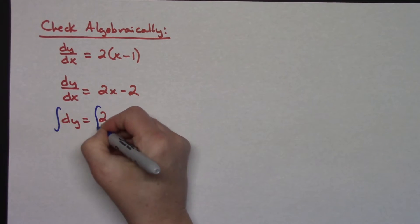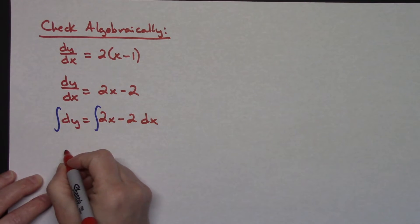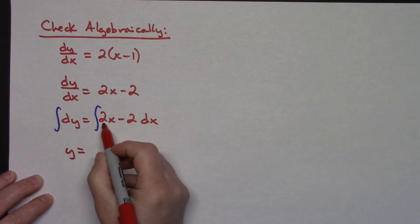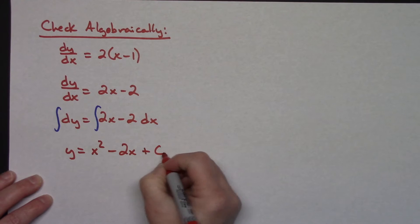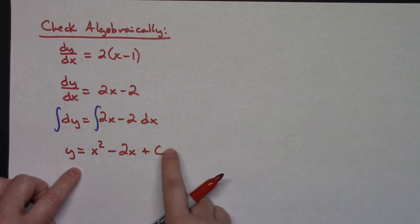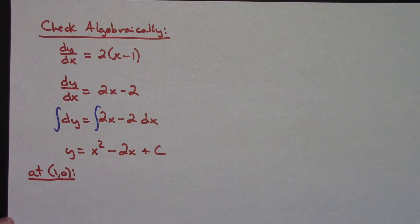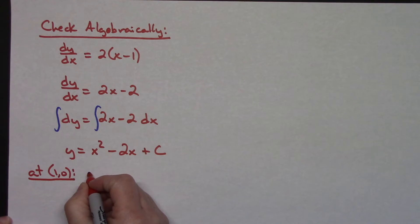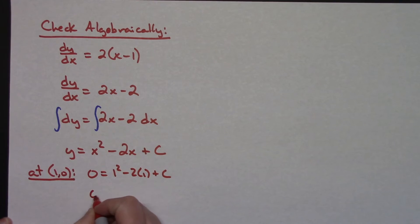Integrating both sides: when I integrate dy I get y. On the right side, integrating (2x minus 2) dx gives x squared minus 2x plus C — we can't forget the plus C. The problem said we go through (1, 0), so I can plug that in to find C. Plugging in y equals 0 and x equals 1: 0 equals 1 squared minus 2 times 1 plus C, giving 0 equals negative 1 plus C, so C equals 1.